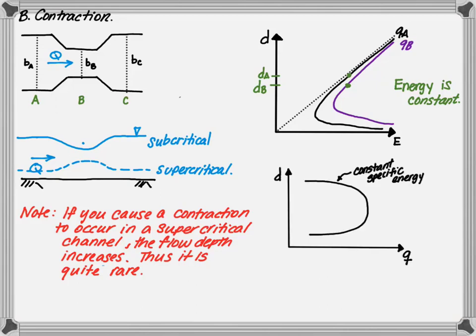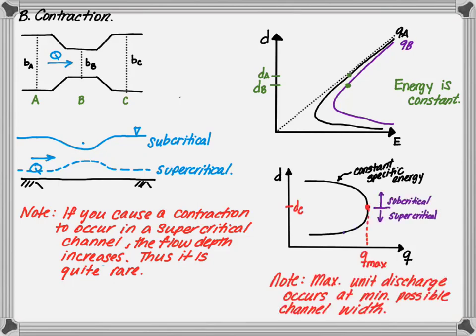Since the specific energy itself is constant, a graph can be depicted that shows depth versus unit discharge. The solid line represents the constant specific energy. At a given unit discharge, the flow depth can be determined. The maximum unit discharge will occur at critical depth, and flow depths greater than critical depth will be subcritical, while those less than critical depth will be supercritical.